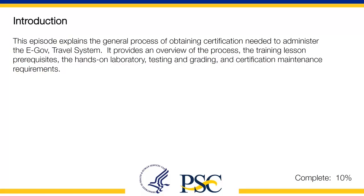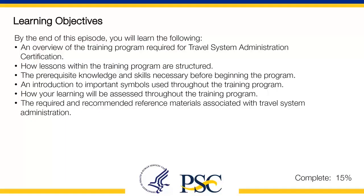The episode covers the hands-on laboratory, testing and grading, and certification maintenance requirements. By the end of this episode, you will learn: an overview of the training program required for travel system administration certification, how lessons within the training program are structured, the prerequisite knowledge and skills necessary before beginning the program, an introduction to important symbols used throughout the training program, how your learning will be assessed, and the required and recommended reference materials associated with travel system administration.